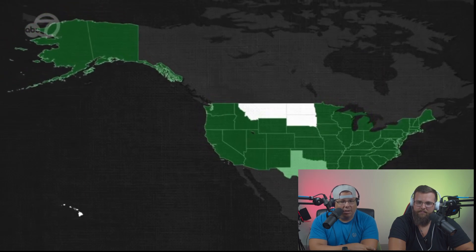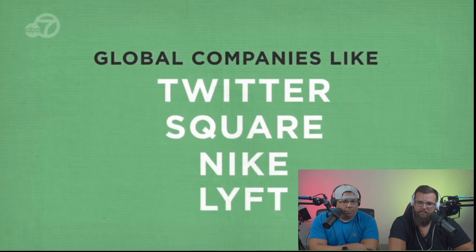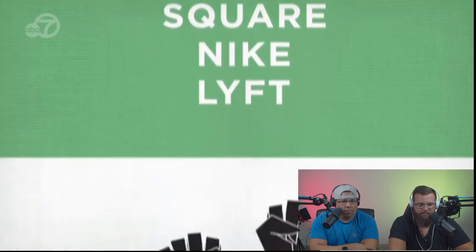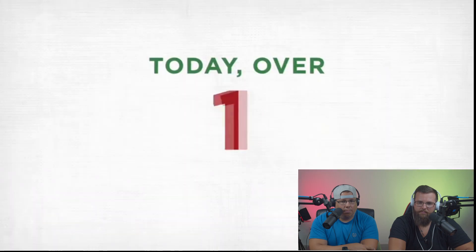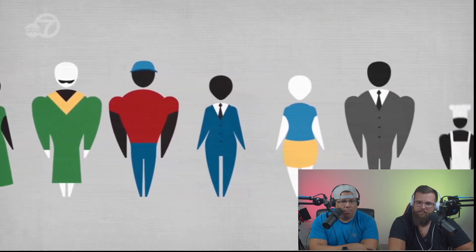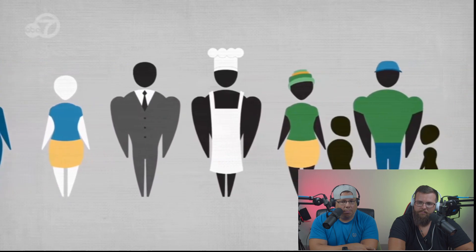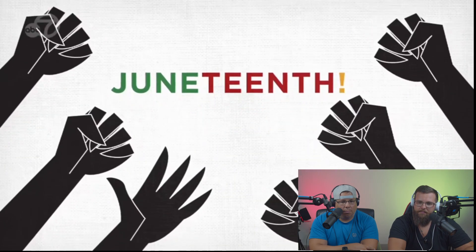Texas became the first state to make Juneteenth an official holiday in 1980, though nobody ever brought it up. Many states and the District of Columbia have recognized Juneteenth as a state holiday or holiday observance. Although not yet a federal holiday at that time, many global companies like Twitter, Square, Nike, and Lyft made the day a company holiday in the wake of protests to end systemic racism sparked by the death of George Floyd in Minneapolis, Minnesota. Today, more than 150 years after celebrations began, June 19th is about remembering the past and moving toward a future of absolute equality. Juneteenth — a celebration of freedom and the fight for its fulfillment.